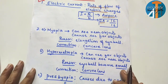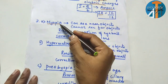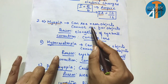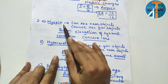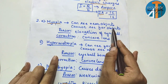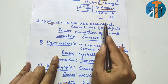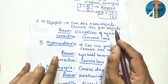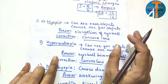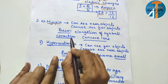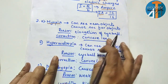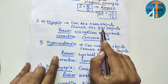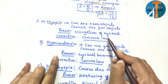The next question is the human eye lesson — an important one. Myopia, hypermetropia, presbyopia. For myopia: can see near objects, cannot see far objects. The reason is elongation of eyeball — the eyeball becomes large. The correction is by using a concave lens. So: can see near objects, cannot see far objects, reason is elongation of eyeball, correction is concave lens.